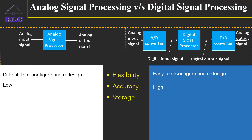Third, storage. Digital signals are easily storable in magnetic media, tape or disks without any loss of information, and they can also be easily transported. Whereas analog signals cannot be stored easily as there occurs loss of data, because they are hardwired machines and the signals cannot be stored very easily.